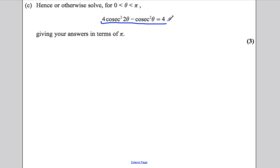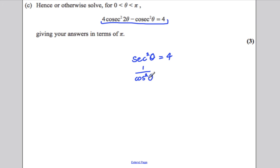This, by part B, can be written as sec squared θ equals 4. Now, sec squared is 1 over cos squared θ. So 1 over cos squared θ equals 4, or you can think of it as 4 over 1. Therefore, cos squared θ equals a quarter.